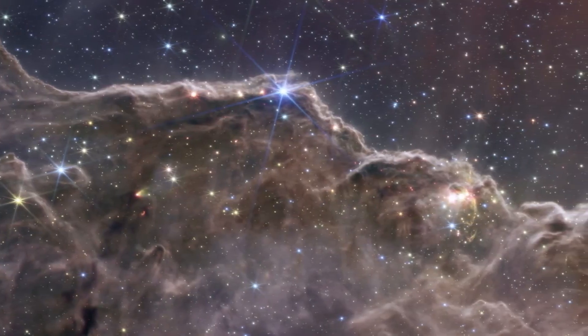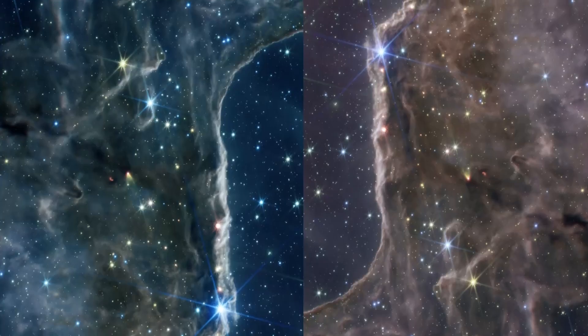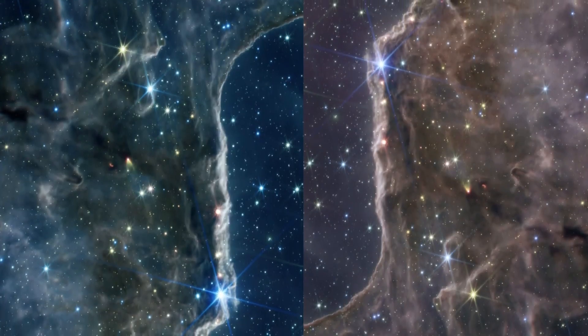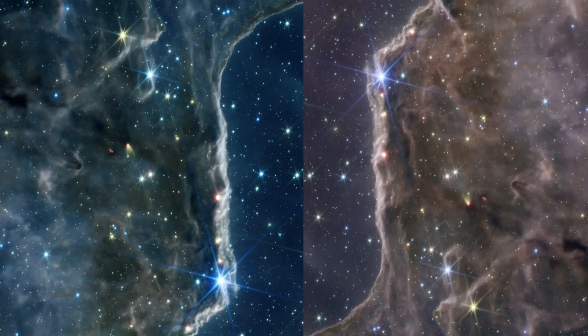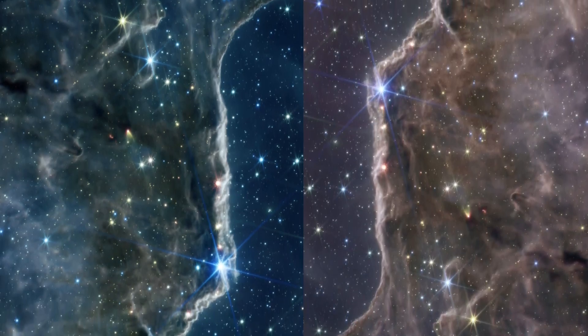This special view helps us see parts of the star formation process that were hidden from us before. It's like shining a light on the secrets of new stars coming to life. Known as the Cosmic Cliffs, this area is like the edge of a huge, empty space filled with gas within NGC-3324, which is about 7,600 light-years away from us.